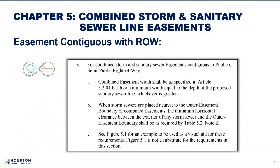For combined storm and sanitary sewer line easements contiguous with the right-of-way, Article 3 combined easement widths shall be specified by the minimum easement width for storm sewers table or the depth of the proposed sanitary sewer line. Article 3B: when storm sewers are placed nearest to the outer easement boundary, clearance between the exterior of any storm sewer and the outer easement boundary must be according to Note 2 of Table 5.2. The outer easement boundary means the boundary furthest offset from the adjacent public right-of-way. A supplement will be issued shortly as this was accepted by the standard review committee but not captured in the 2022 edition of the IDM.